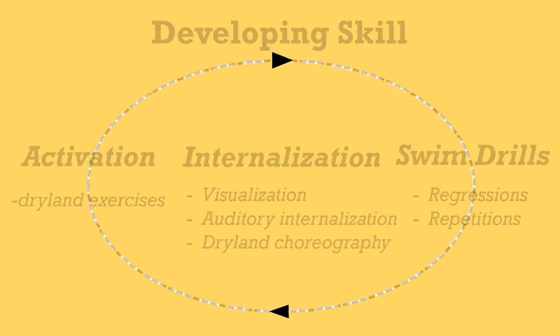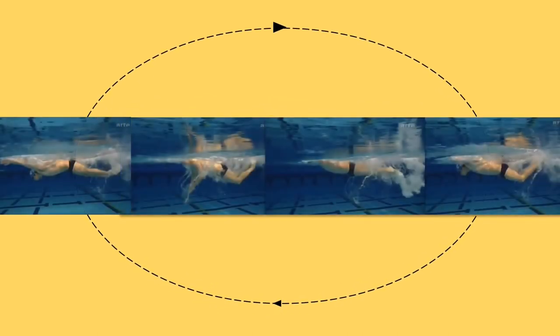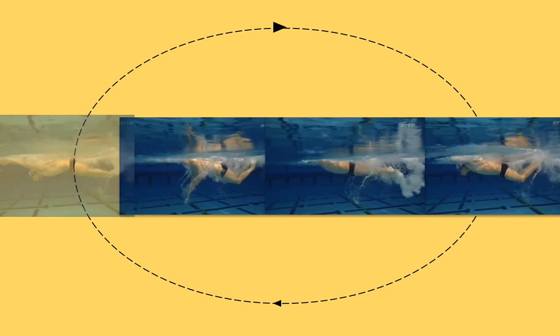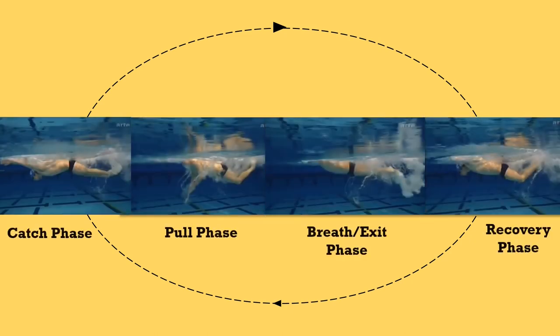Learning proper rhythm is crucial when the time comes to connect the arms for propulsion. Since there are four distinctive beats led by the kick, Phelps also coincides the pulling phases with these four beats.